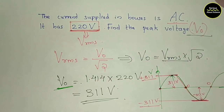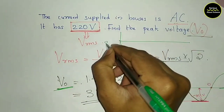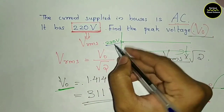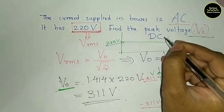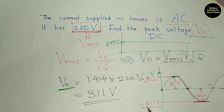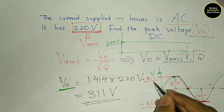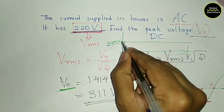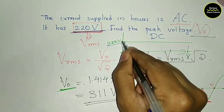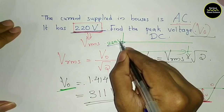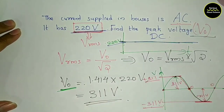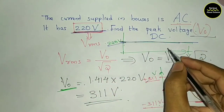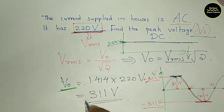If we are using DC at 220V, the DC value is steady at 220V. But for AC of 220V RMS, the peak value goes up to 311V. So AC of the same voltage is more dangerous as compared to DC of the same voltage, because the peak value of AC is higher.